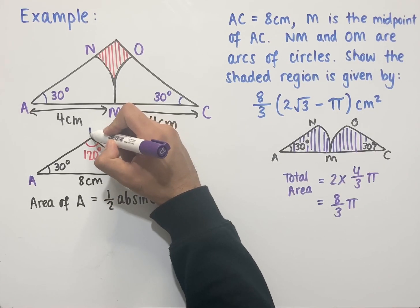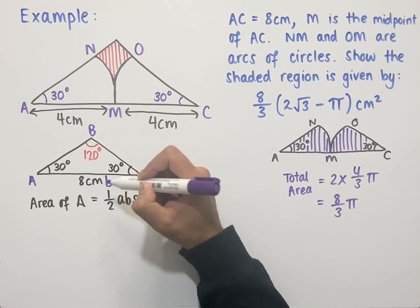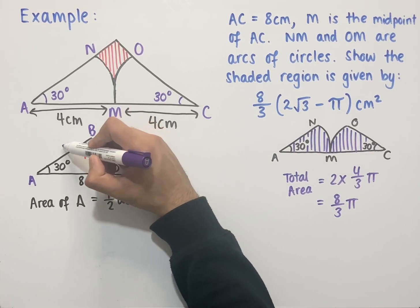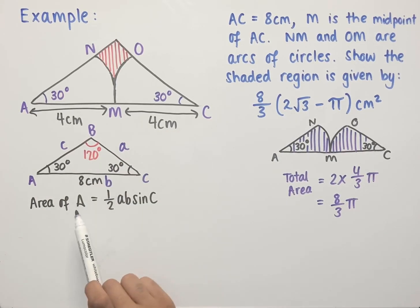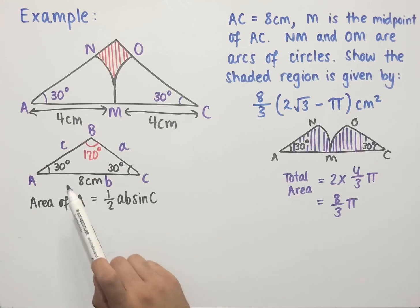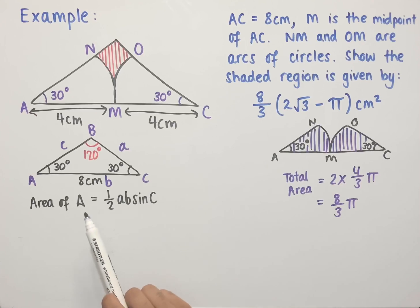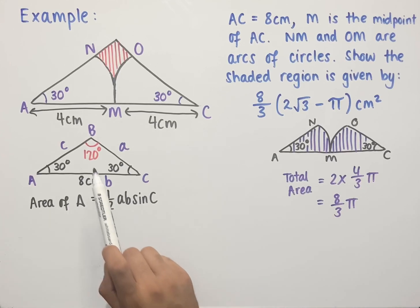Labelling the top vertex as capital B, the opposite side to capital B is lowercase b, the opposite side to capital C is lowercase c, and the opposite side to capital A is lowercase a. To use the area formula we need two side lengths and the angle in between. We have the base of 8 centimetres and all three angles, so we need to find one of the other side lengths using the sine rule.